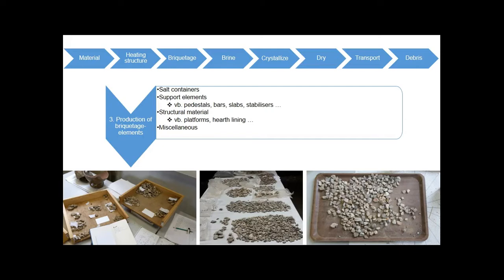An important and crucial element in this production process for our research was the production of briquetage elements. Briquetage is a collective term for ceramic elements that were used in the salt production process. There are three main categories: salt containers, support elements, and structural materials. As you can see from the pictures below, briquetage elements are very brittle, which results in a huge degree of fragmentation.